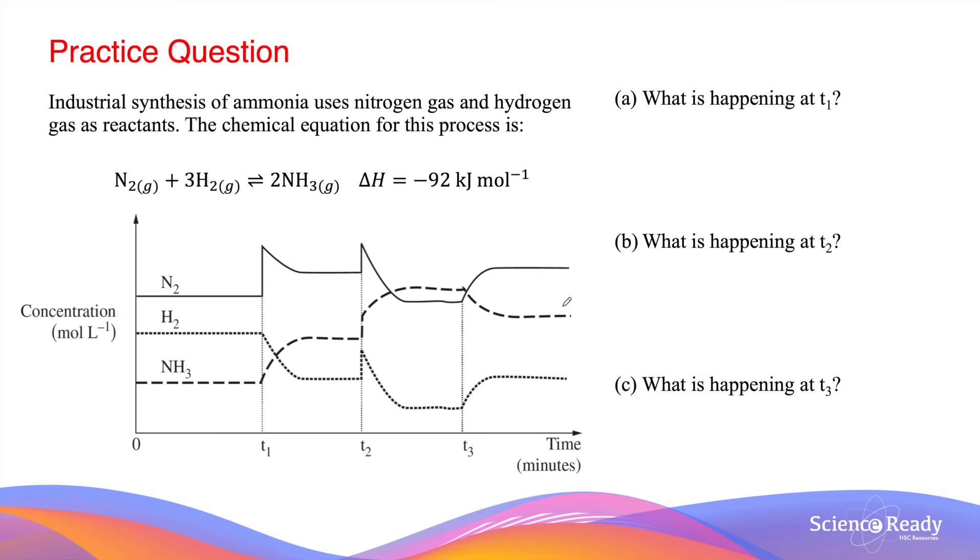This means the equilibrium position at T3 has been shifted to the left side, causing an increase in reactant concentration and a decrease in ammonia concentration or product concentration.